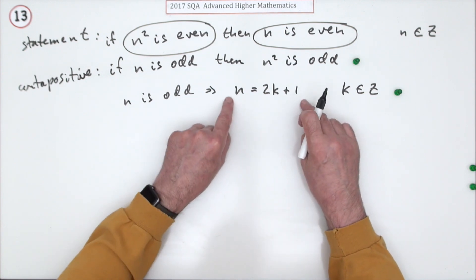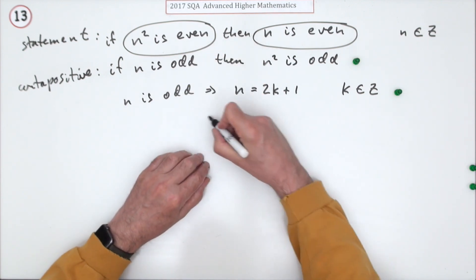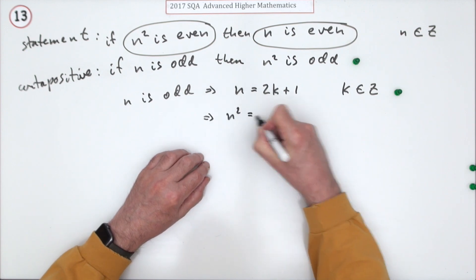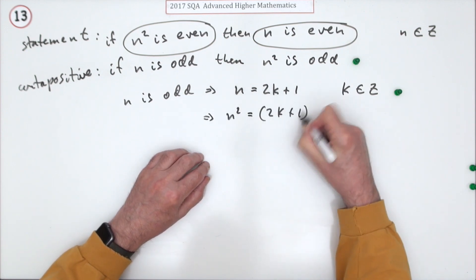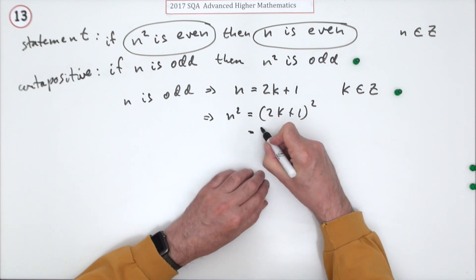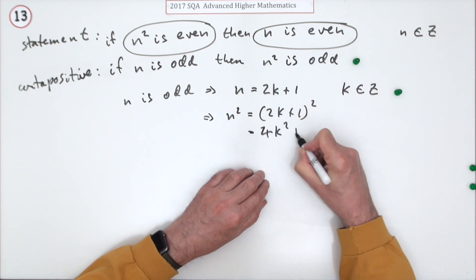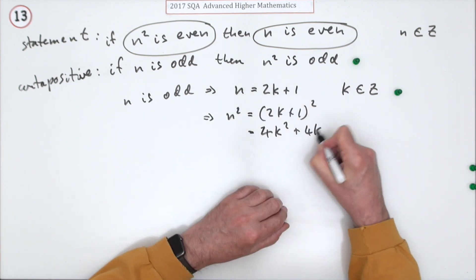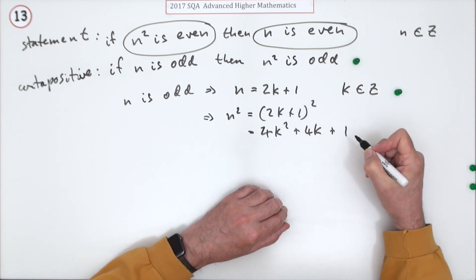Now just manipulate this to find n squared. So that means that n squared would be 2k plus one squared. So expanding that, 4k squared plus twice the product, 4k, square the last plus one.